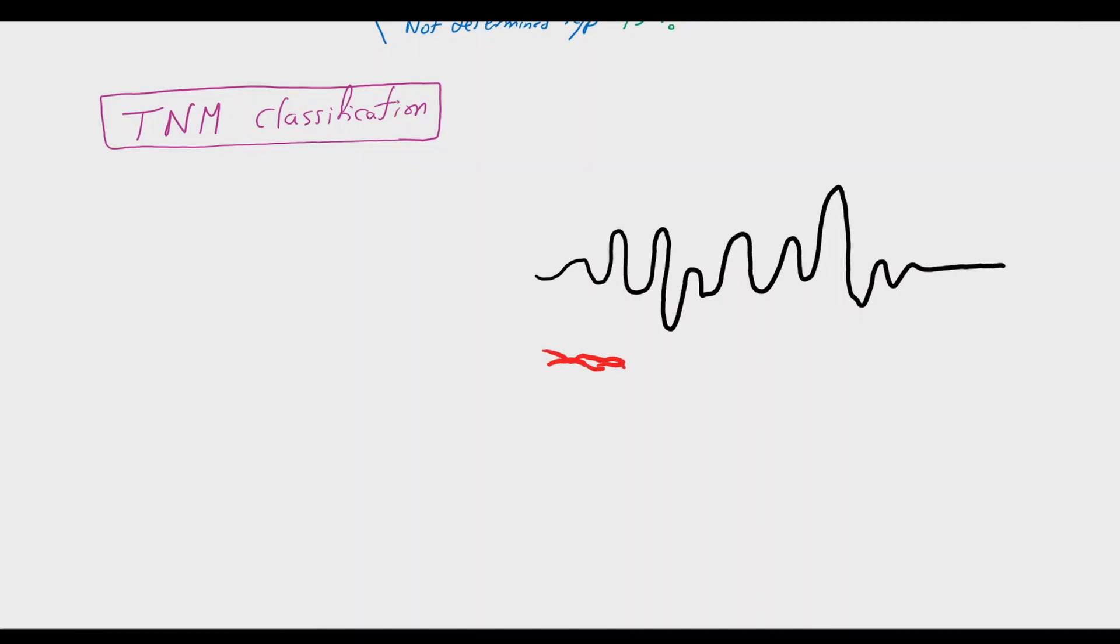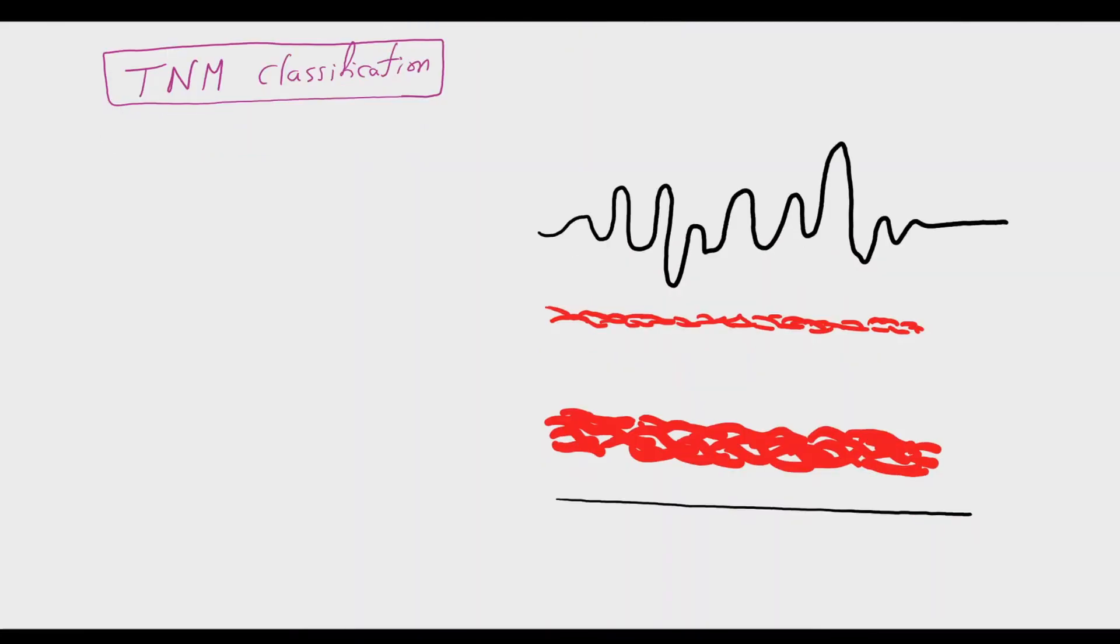We will see here the gastric wall, which consists of mucosa with its characteristic folds, beneath it a layer of muscularis mucosa, then the submucosa, and the muscularis propria, then the subserosa, and the last layer is the serosa or visceral peritoneum.